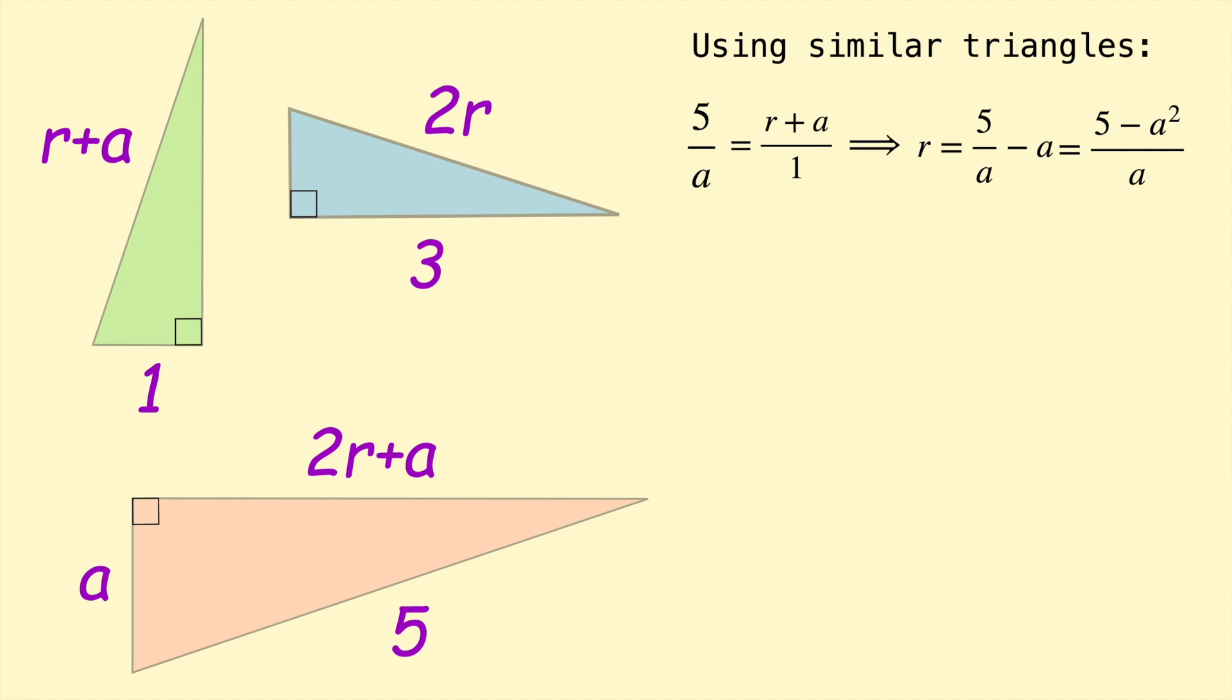Next we can create another equation using the other ratios. So 2R plus A to 5 is the long leg to the hypotenuse. So that ratio is equal to the same ratio on the blue triangle, 3 to 2R. And these two equations are actually enough to solve for A and R. So rearranging this we get 4R squared plus 2RA equal to 15. So I multiplied this side by 2R, this side by 5. And now because we have R in terms of A, we can substitute that in for R here and then solve for A.